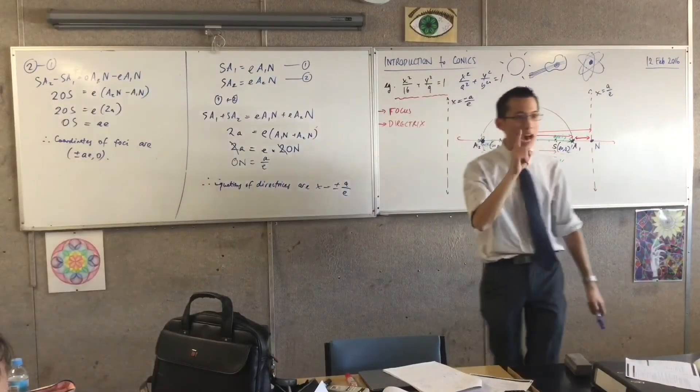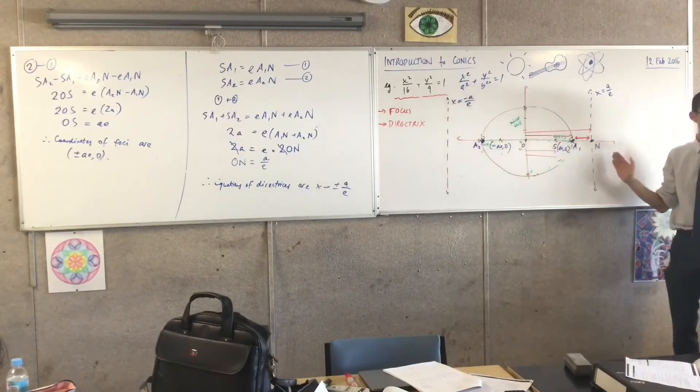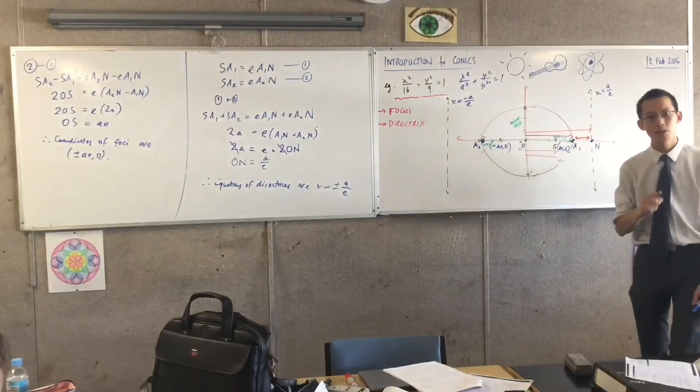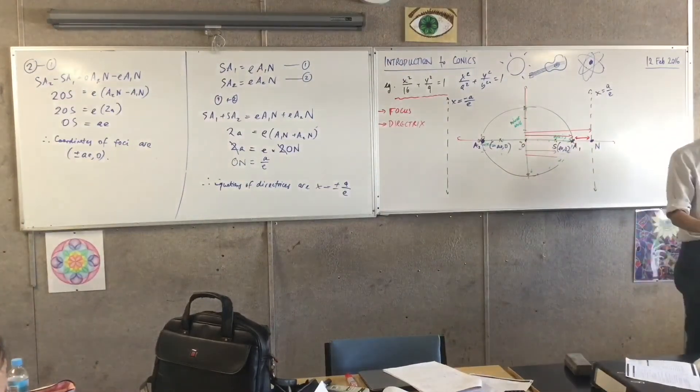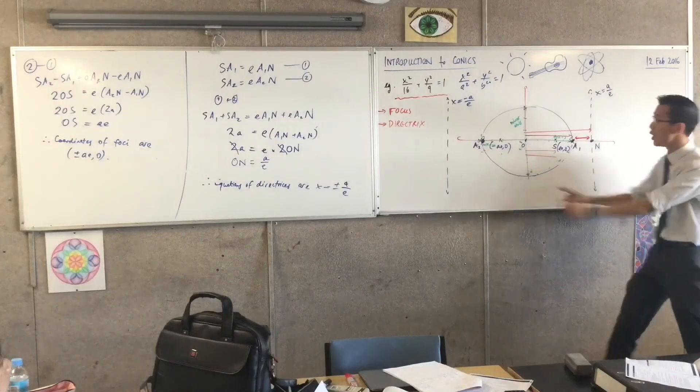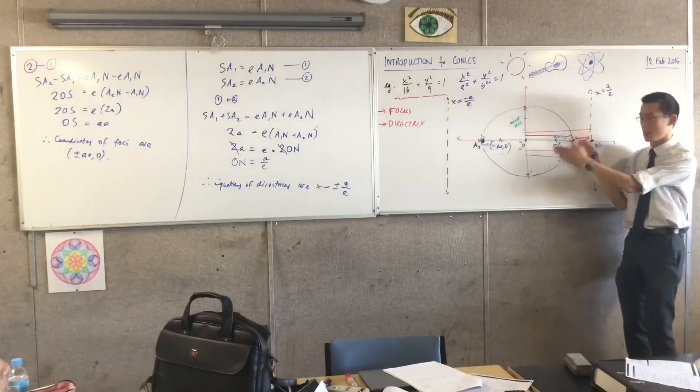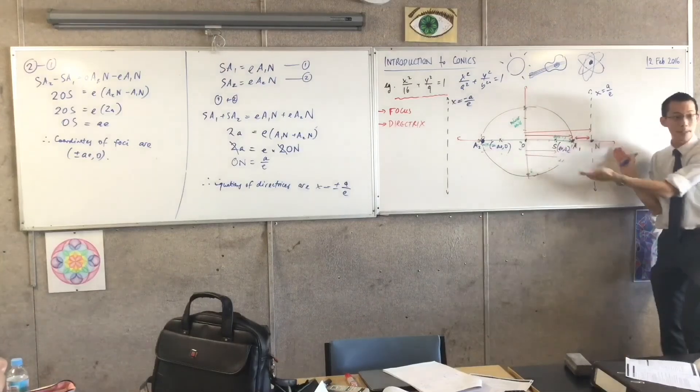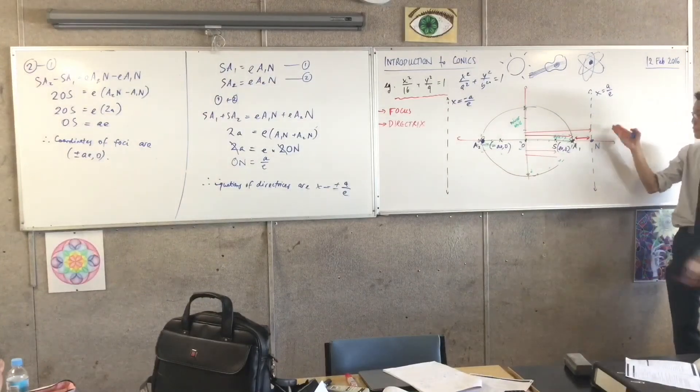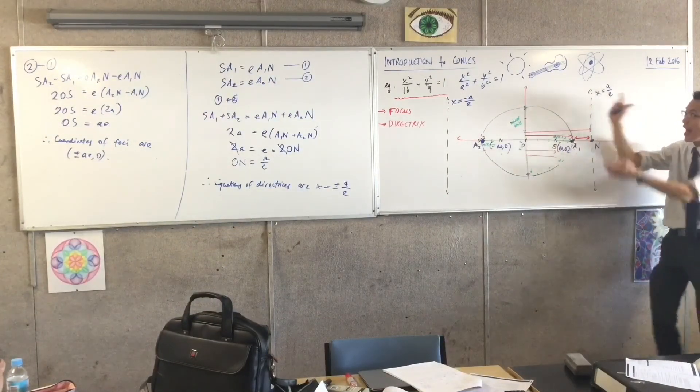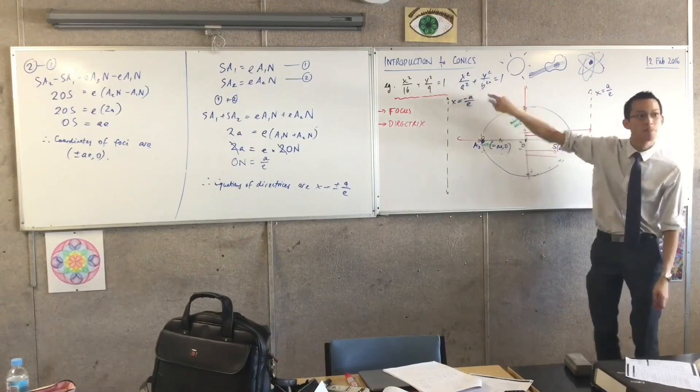Since you now know the coordinates of the foci, any equation of the directrix, you're back to where we started in period zero, you can use those to get the equation of the locus. Right? You can use those to get that. Remember? Because we've got a distance between two points and then you've got a perpendicular distance. You just need to know the coordinates of the point and the equation of the line, which you know, we just established, and you should be able to arrive here. Right? Can you do it? You just keep it a shot. Why?